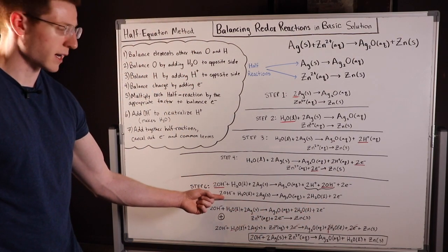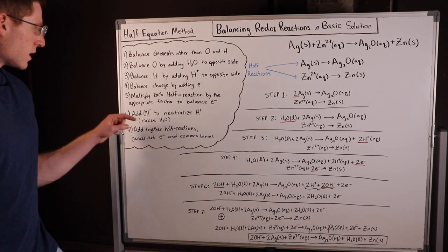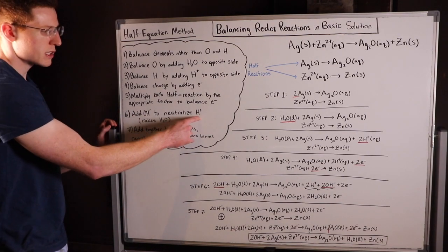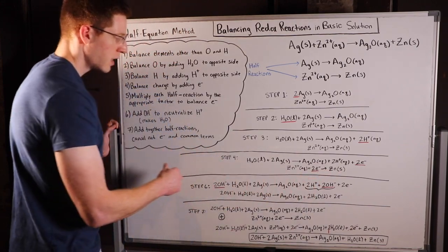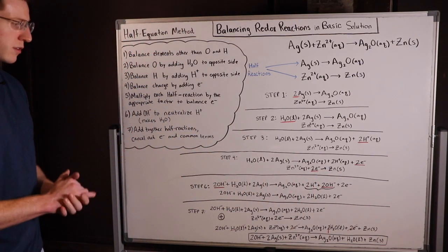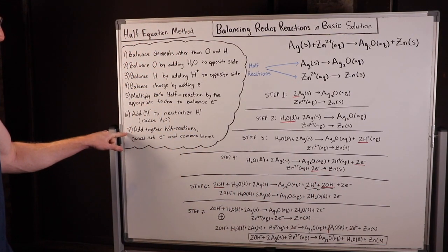This neutralizes to make two waters and I'll retain this two OH here on my reactant side. Again we don't have any H pluses to neutralize in this reaction here in the zinc reaction, so step six is unnecessary for the zinc reaction.